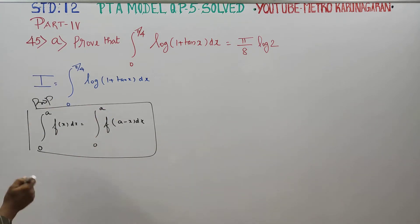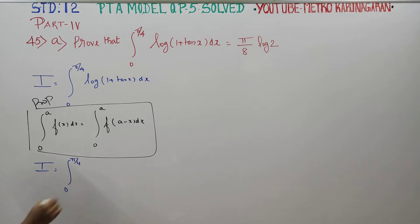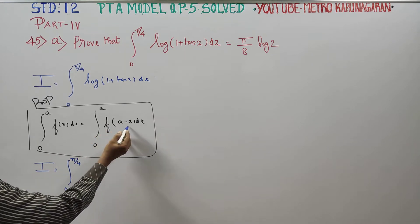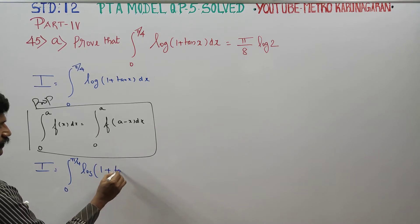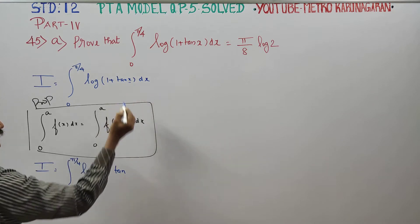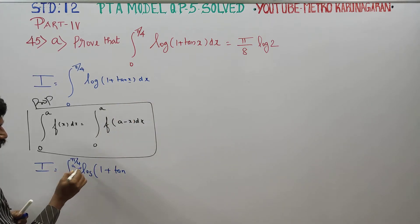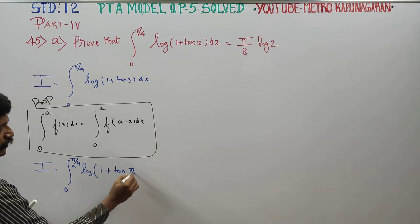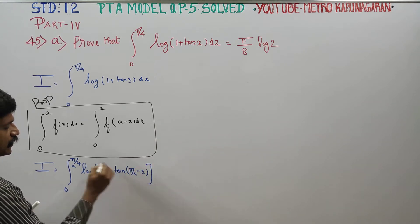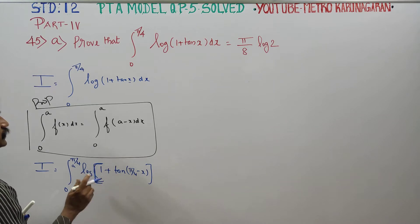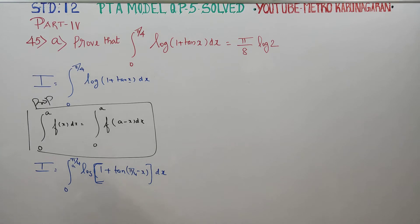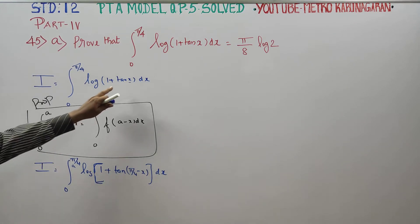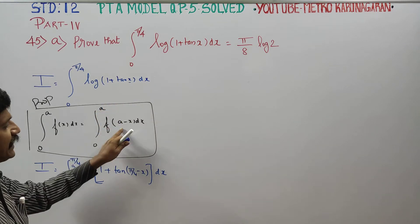Using that property, I = ∫₀^(π/4) f(a − x) dx. This is a standard property where we simply convert x to (a − x). Here a = π/4, so we replace x with (π/4 − x). This gives I = ∫₀^(π/4) log(1 + tan(π/4 − x)) dx.